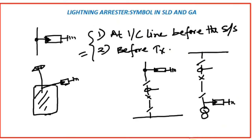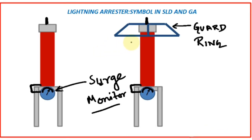Now we will discuss the general arrangement drawing of lightning arrestor and terminal connection. This is the general arrangement of a surge arrestor — these two shown are basically the same type. This is the main outer insulator, and in between it the main surge arrestor material is placed. This is connected to the earth terminal and this is the phase connector terminal — the main line or phase will be connected here.